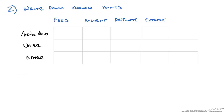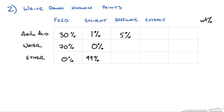Once we have that we are going to write down the information that we know — our weight percent compositions for our three components in the feed, the solvent, the raffinate, and the extract. This is where we are going to start.